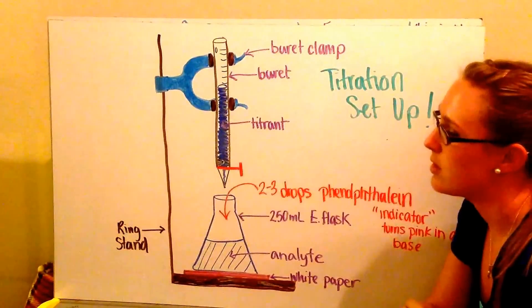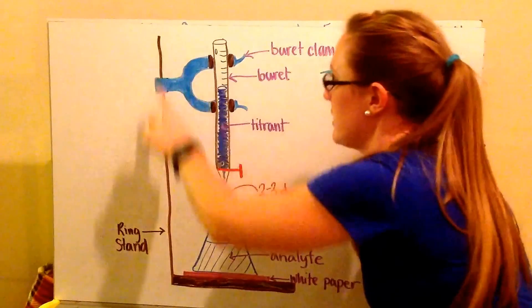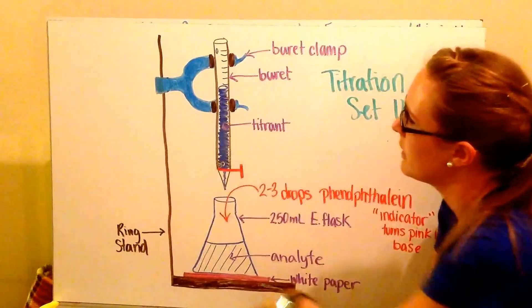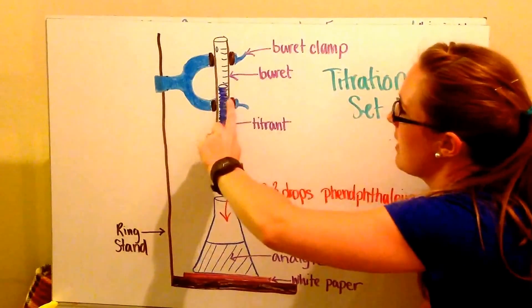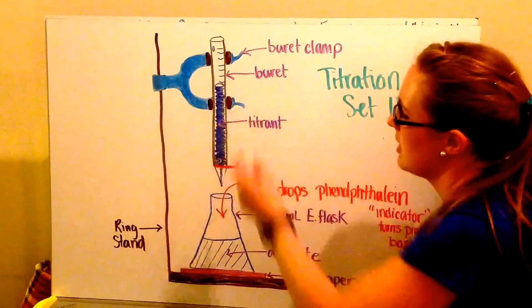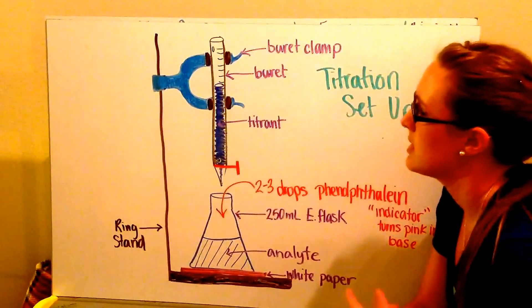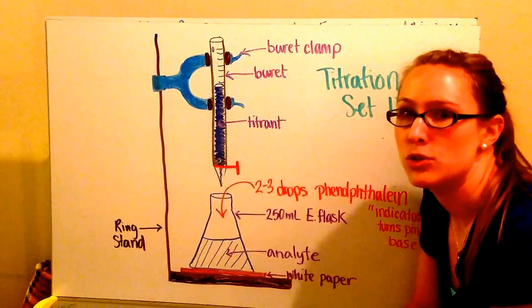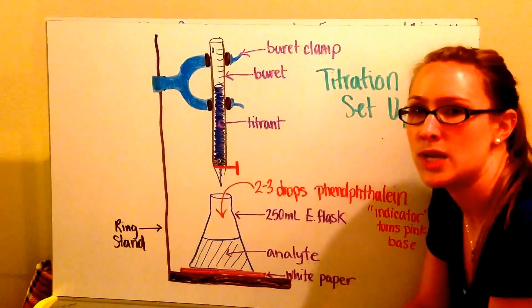The typical titration setup has a ring stand that holds the burette clamp, which holds your burette. The burette is what we put the titrant in, which is our solution of known concentration that we're going to titrate with.